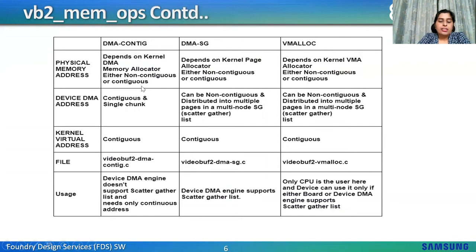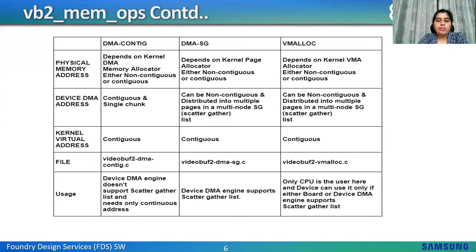This table gives a brief idea of which kernel memory allocator to choose based on requirements. For DMA-contig, physical memory address depends on the kernel DMA memory allocator and can be contiguous or non-contiguous; device DMA address will be contiguous in a single chunk. For DMA-SG, it depends on the kernel page allocator; DMA address will be non-contiguous across multiple pages. For vmalloc, it depends on the kernel vmalloc allocator; DMA address will also be non-contiguous. Kernel virtual address will be a contiguous chunk in all three cases. File locations are in drivers/media/common/videobuf2: videobuf2-dma-contig.c, videobuf2-dma-sg.c, videobuf2-vmalloc.c.